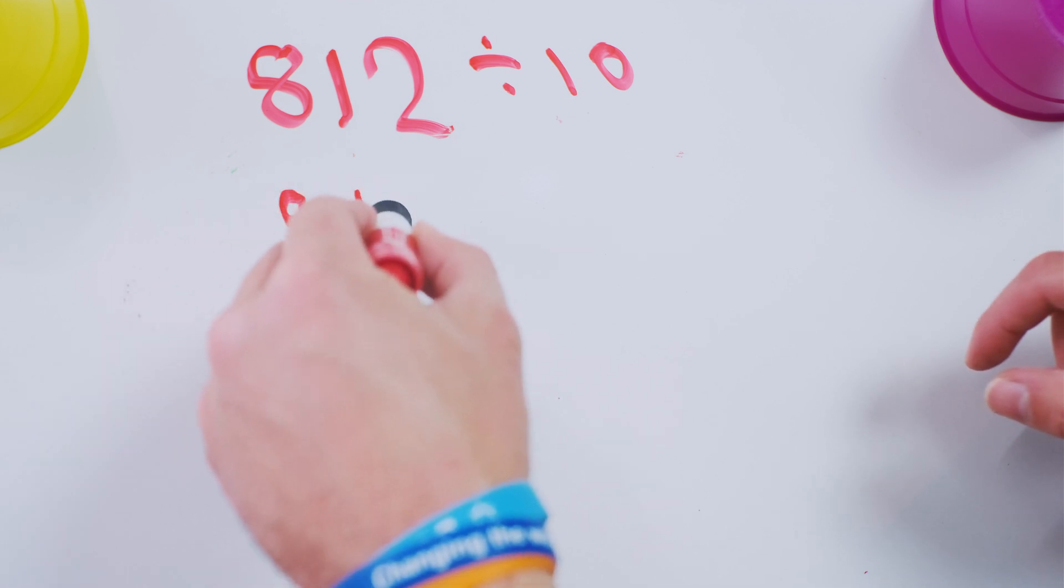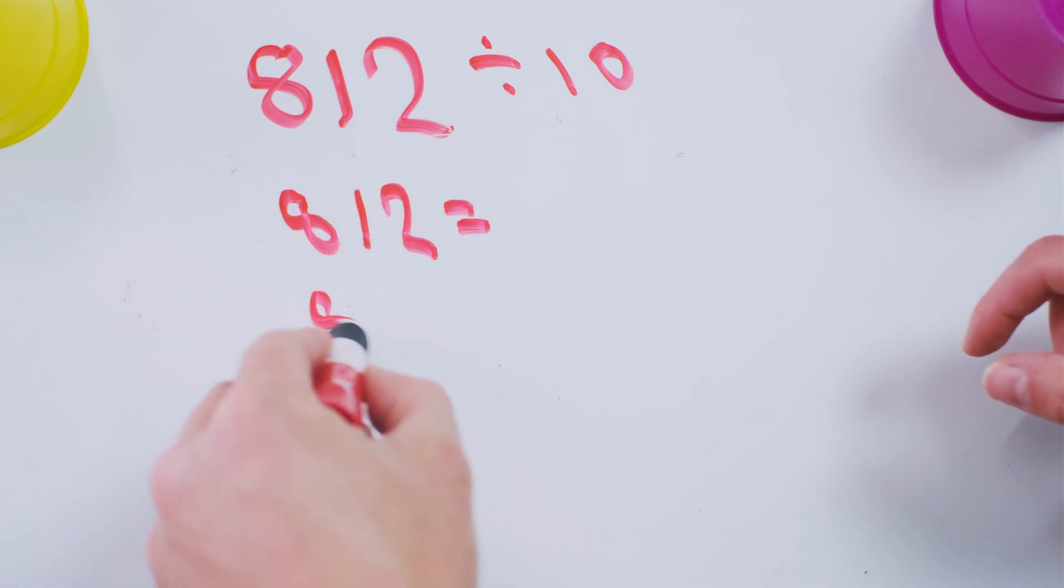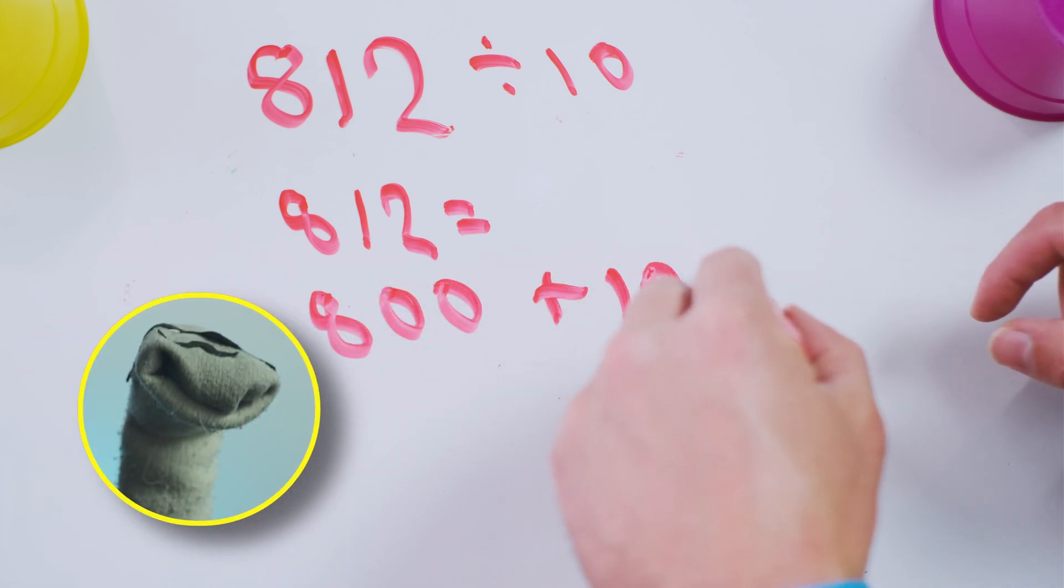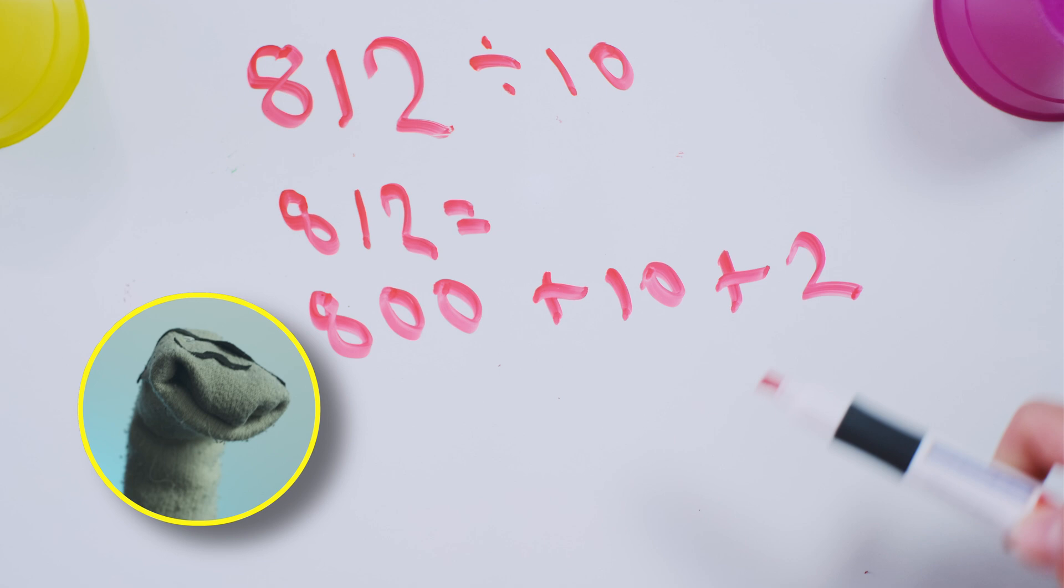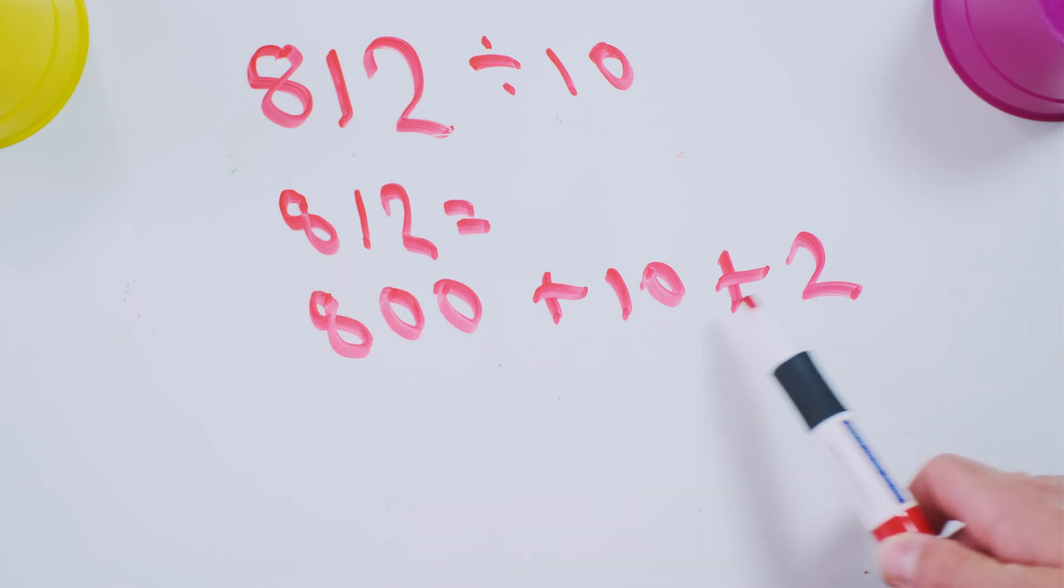812 is equal to 800 plus 10 plus 2. It's in the name. 812, 810 and 2.